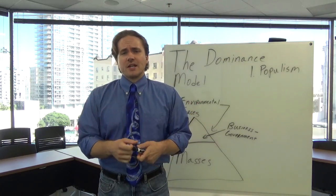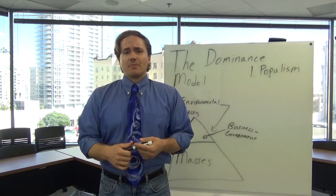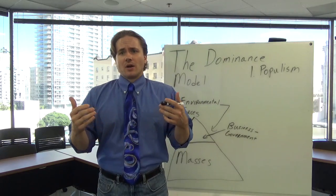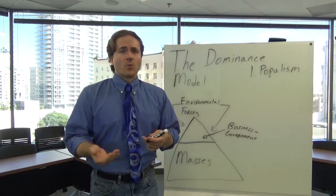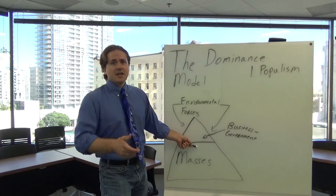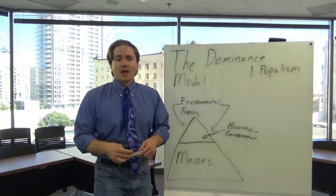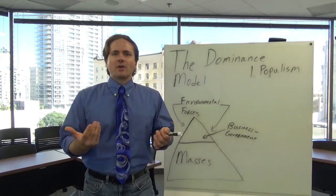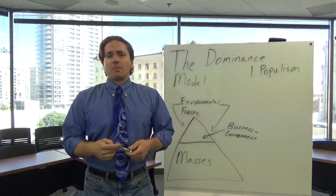And, of course, as we kind of start proceeding more throughout history, you can think about the Russian Revolution, where Lenin basically said those at the top were taking advantage of everybody else, and he promised them peace, land, and bread. It doesn't really matter. These are all forms of populism.